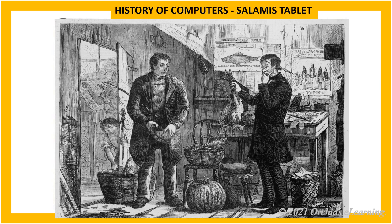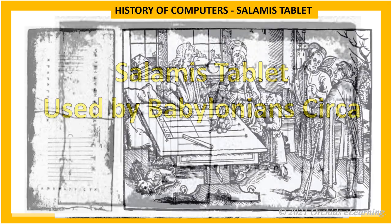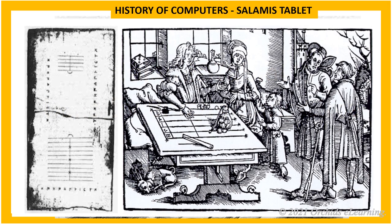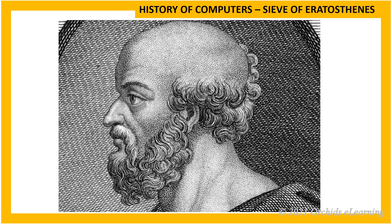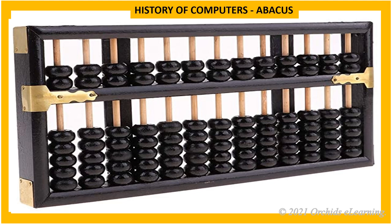The oldest counting board is the Salamis Tablet. It was used by the Babylonians circa 300 BCE. It was a piece of wood carved with stone or metal grooves; between the grooves, beads or pebbles were moved to calculate. In the third century BCE, Eratosthenes invented a simple algorithm called the Sieve of Eratosthenes. This algorithm was used to find all the prime numbers up to any given limit.